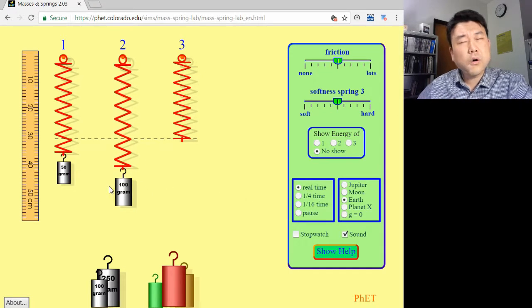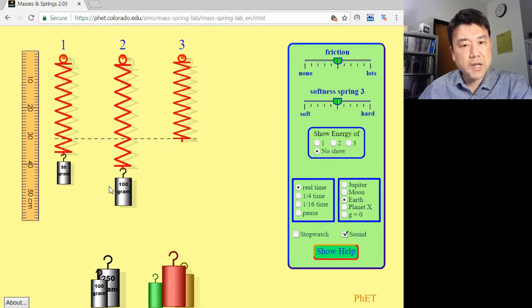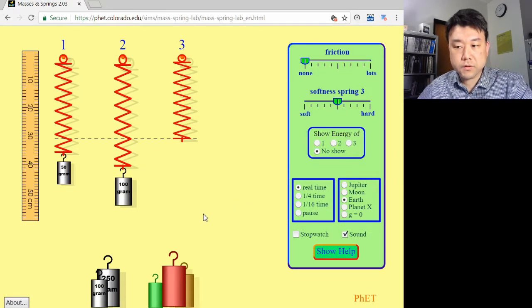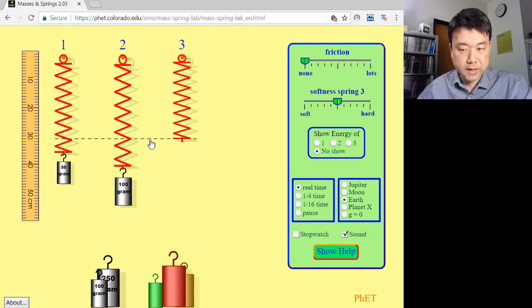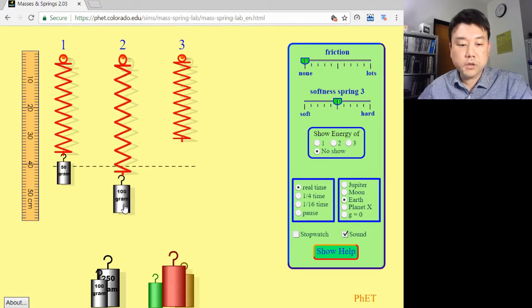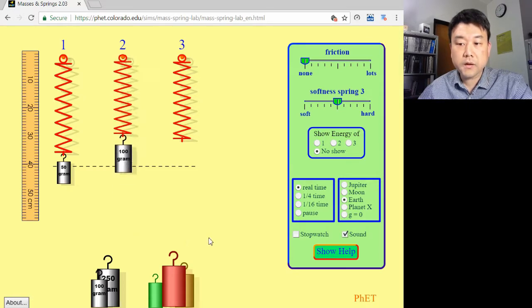In fact, the whole reason it comes to a stop at all is because of friction. So let me get rid of that. Now, when you set the mass in motion, let me mark the equilibrium position, it will oscillate back and forth forever.